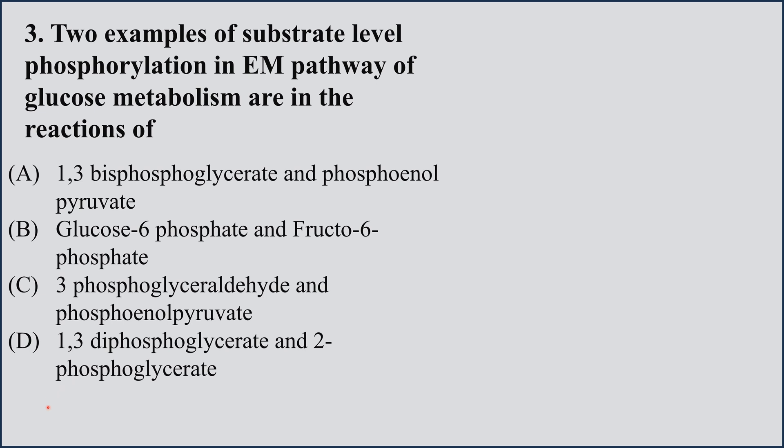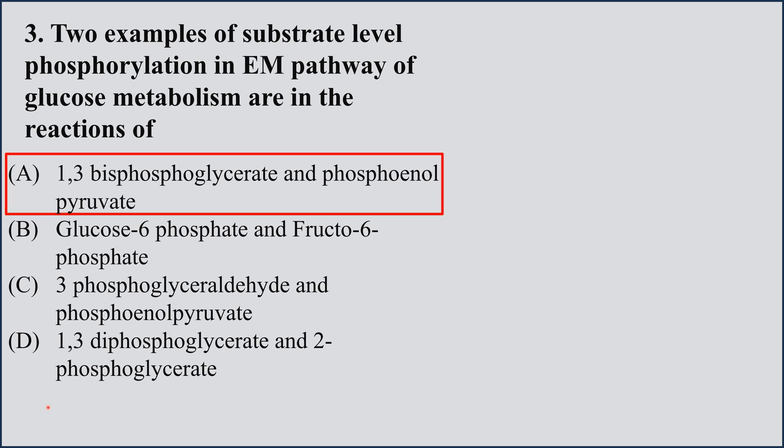The right option is A. They have asked about what are the two substrates at which substrate level phosphorylation takes place — they are asking about direct ATP synthesis. The right option is A: 1,3-bisphosphoglycerate, where 1 ATP is produced, and phosphoenolpyruvate, where 1 ATP is produced by this reaction.